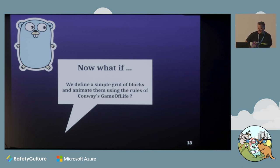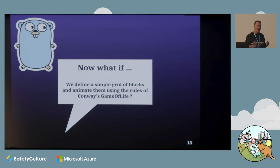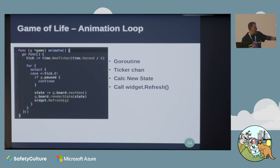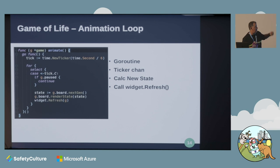A little gopher pops up. Let's say we have a frame buffer device with 64 pixels in a square and we want to animate that using Conway's Game of Life rules. Looking at the animation loop, we have a simple Go routine that fires off a ticker. We're pulling from the ticker channel six times a second, and then down the bottom we generate the next iteration of the screen and then call widget.refresh. Very simple code.